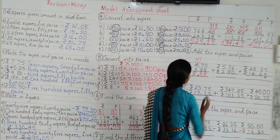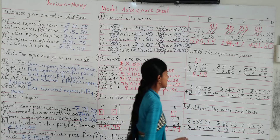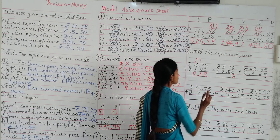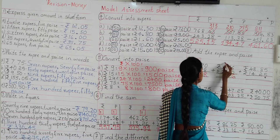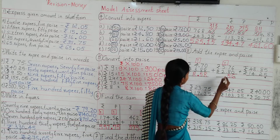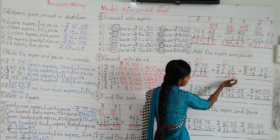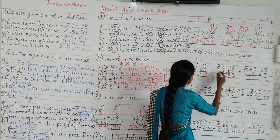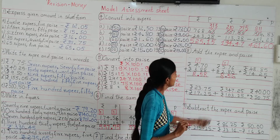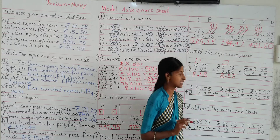Now look at the next one: rupees 5, 76 paisa plus rupees 2, 80 paisa. 6 plus 0 is 6, write in the ones column; 7 plus 8 is 15 — carry 1 on the hundreds column, write down 5 in the tens column. Then insert the dot before 2 digits. 5 plus 2 is 7; 7 plus carry 1 is 8. Write down in the hundreds column. So what is the sum? 8 rupees 56 paisa.